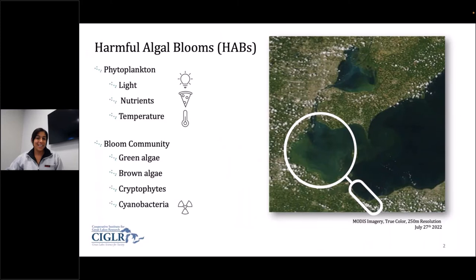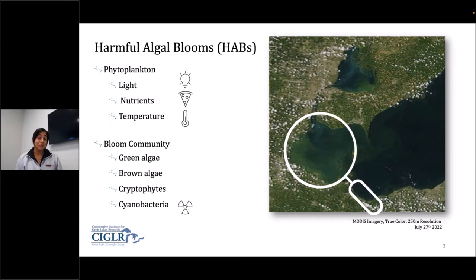So, harmful algal blooms. As you can see on the right side of the screen, we have this picture from MODIS imagery of the Western Basin of Lake Erie. You can see this great green color in the basin, and that is a result from a harmful algal bloom. A harmful algal bloom is made up of phytoplankton, which have three big factors that can control the magnitude at which they show up: light, nutrients, and temperature. Any rapid increase of these factors can lead to a bloom. You get harmful algal blooms when the bloom community has an overabundance of cyanobacteria, which can produce toxins and can be detrimental to the ecosystem and drinking water resources.